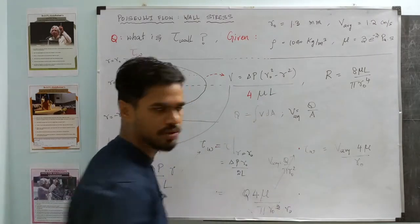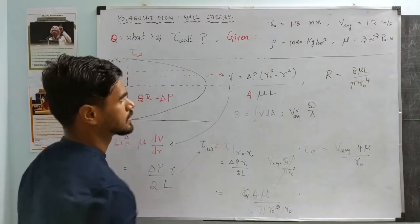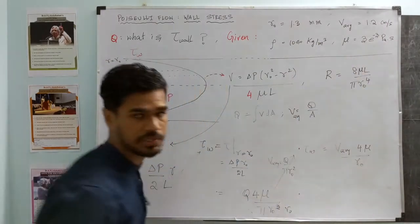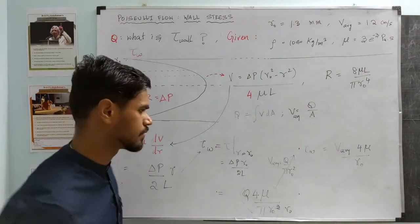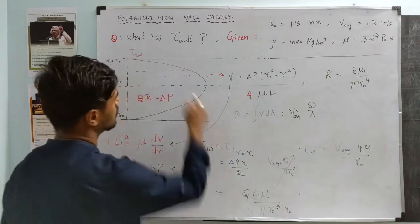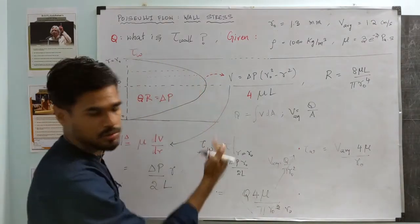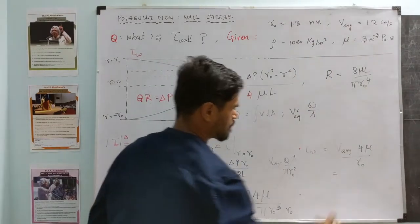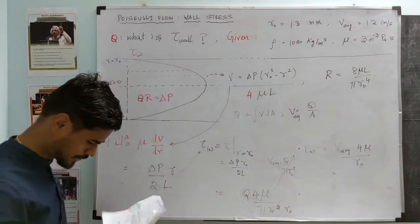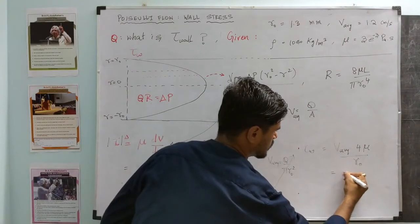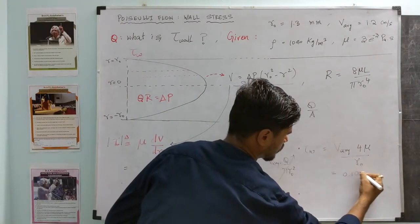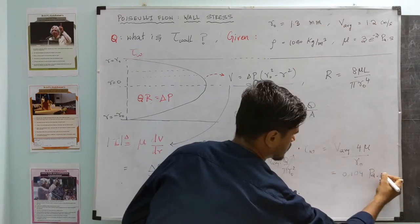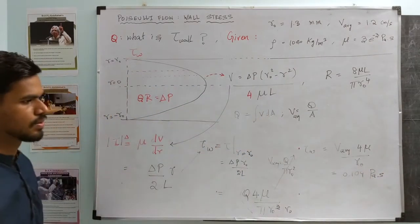So once I use that, we have Q divided by πr₀² times r₀. This term becomes τ_wall equals v_avg times 4μ over r₀. Now do we have enough information to calculate the shear stress? Yes, we know v_avg, we know r₀, we also know the viscosity. Please go ahead and find the answer to our original question by plugging in these known variables. What I have here is 0.104 Pascal-seconds.